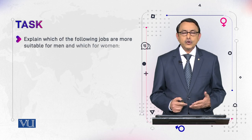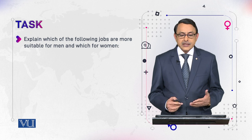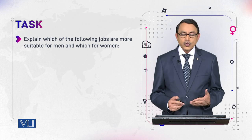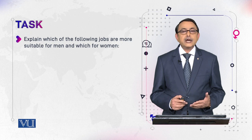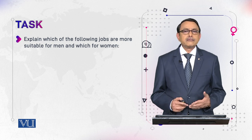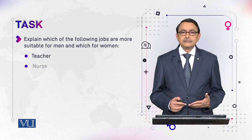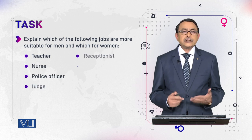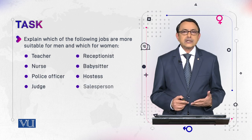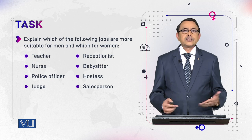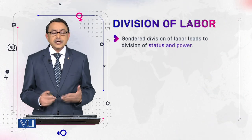Now we will discuss a task that you will do on your own: explain which of the following jobs are more suitable for men and which are suitable for women — teacher, nurse, police officer, judge, air hostess, and salesperson. Continuing this talk after the task, you will have additional thinking about gender division of labor.